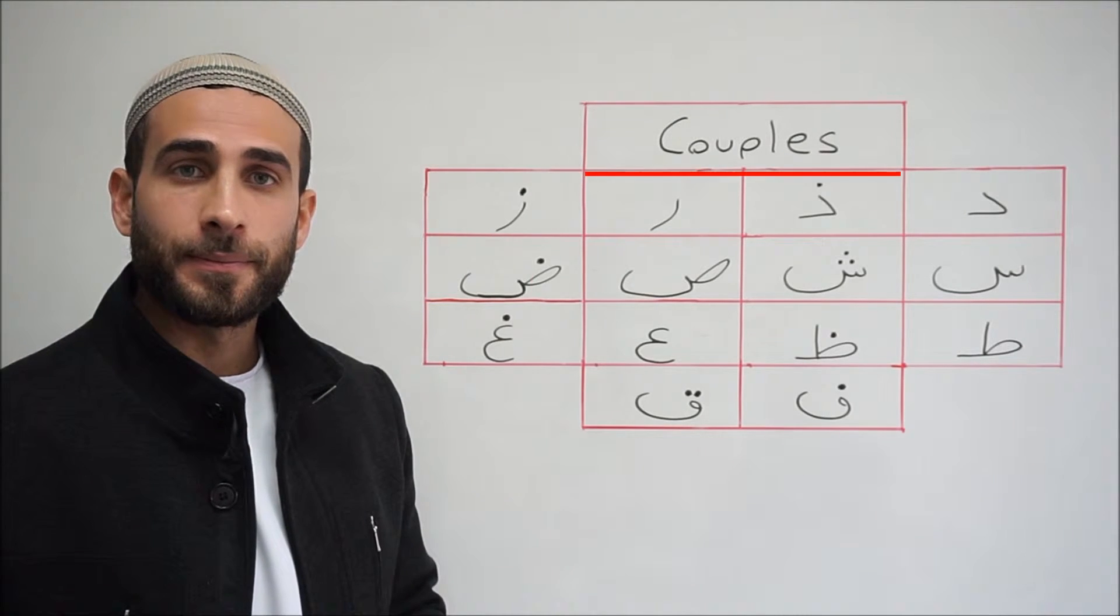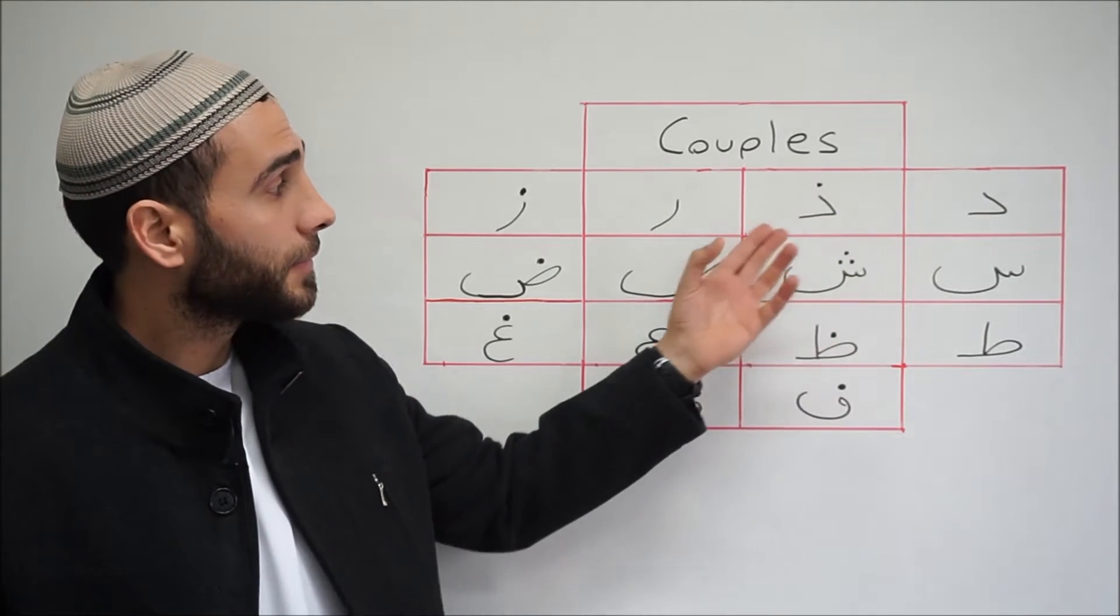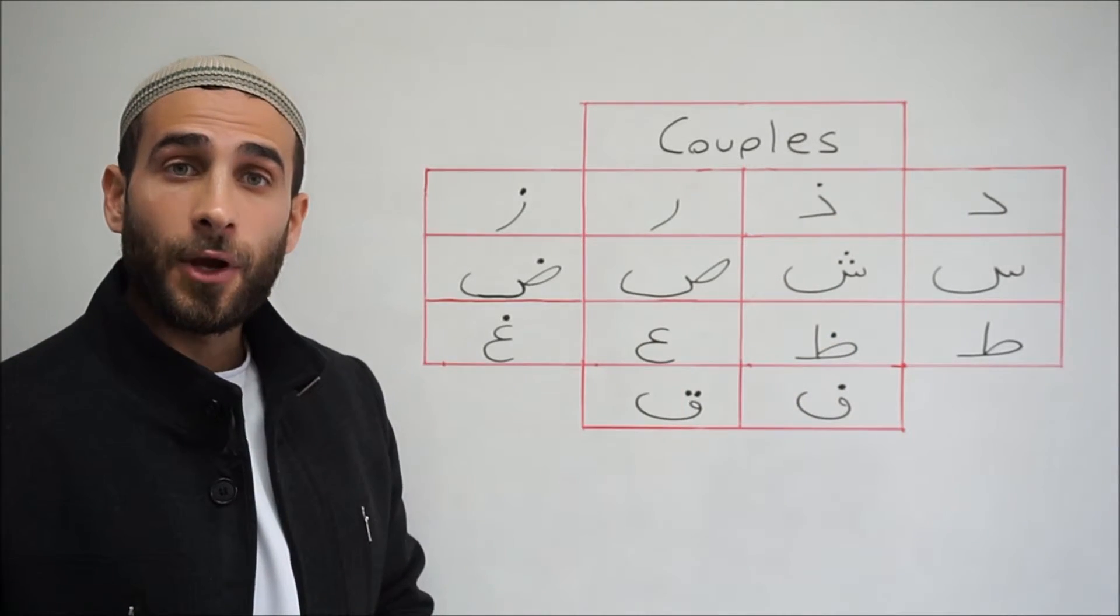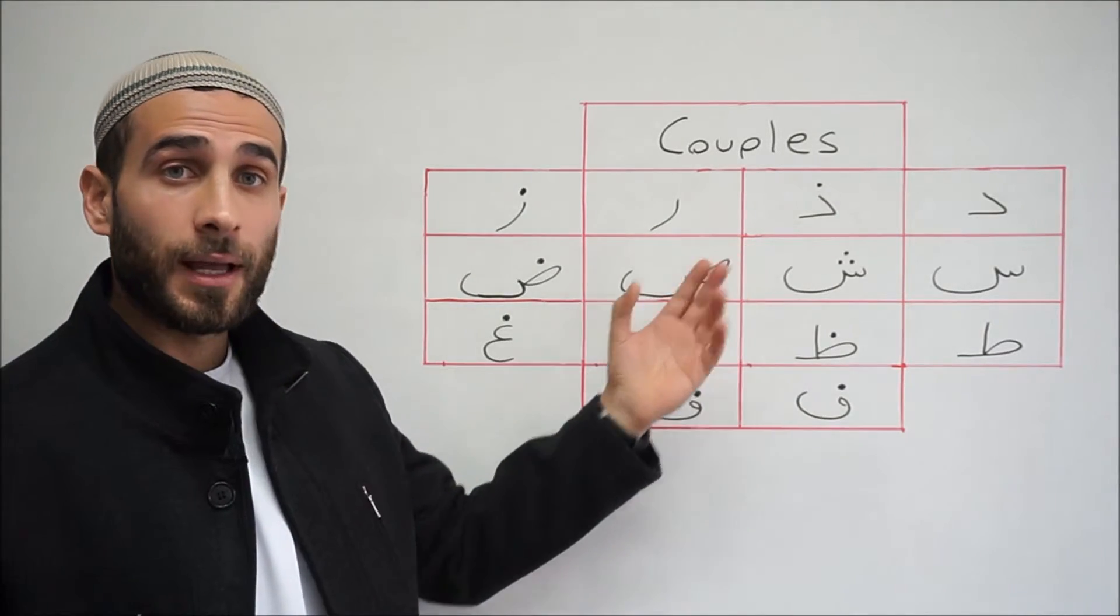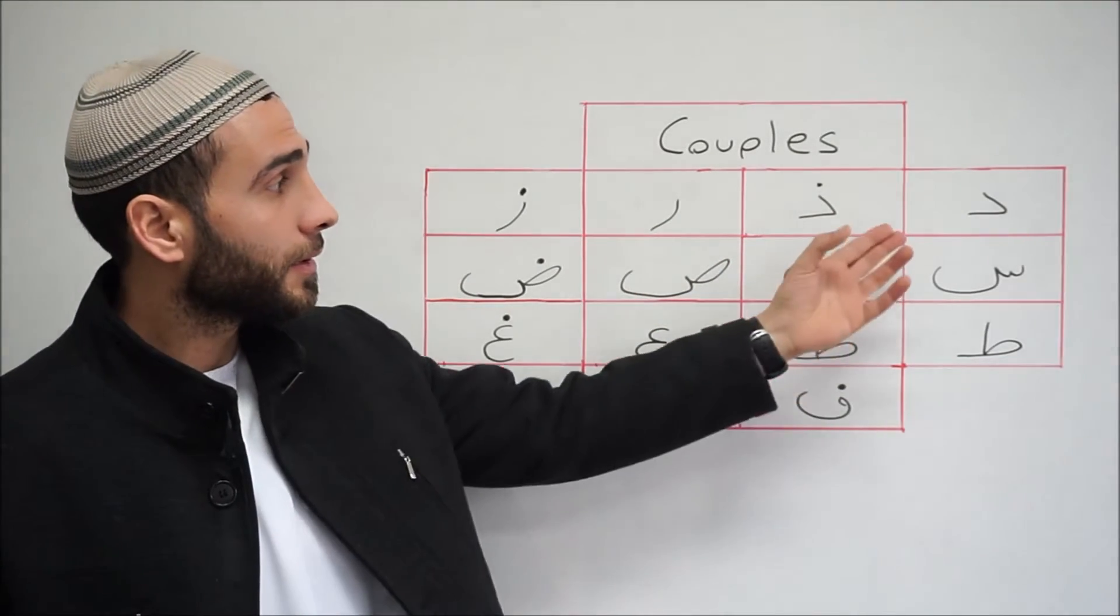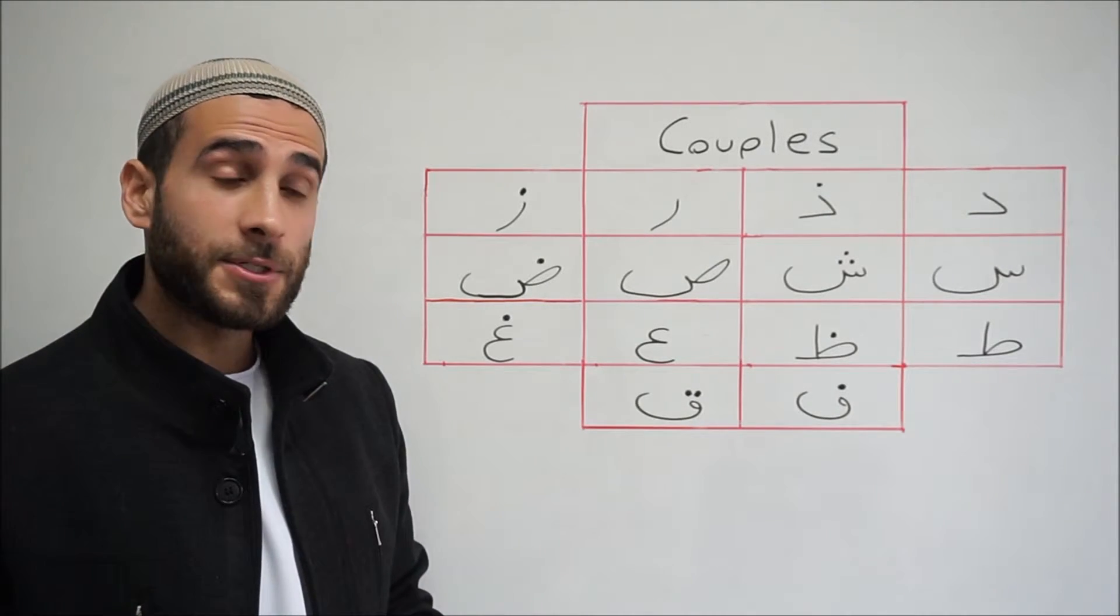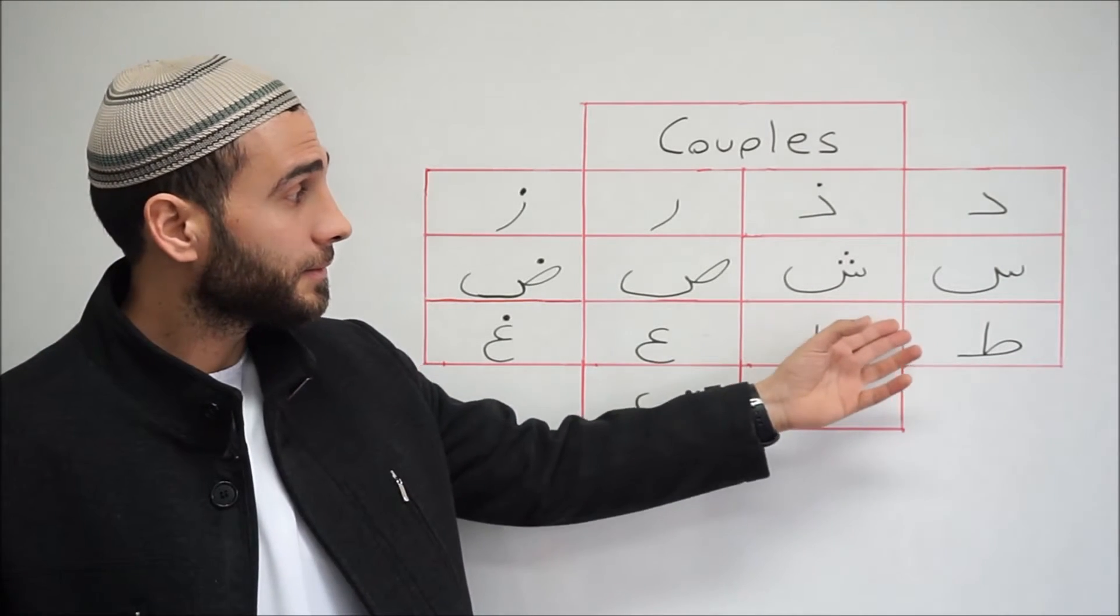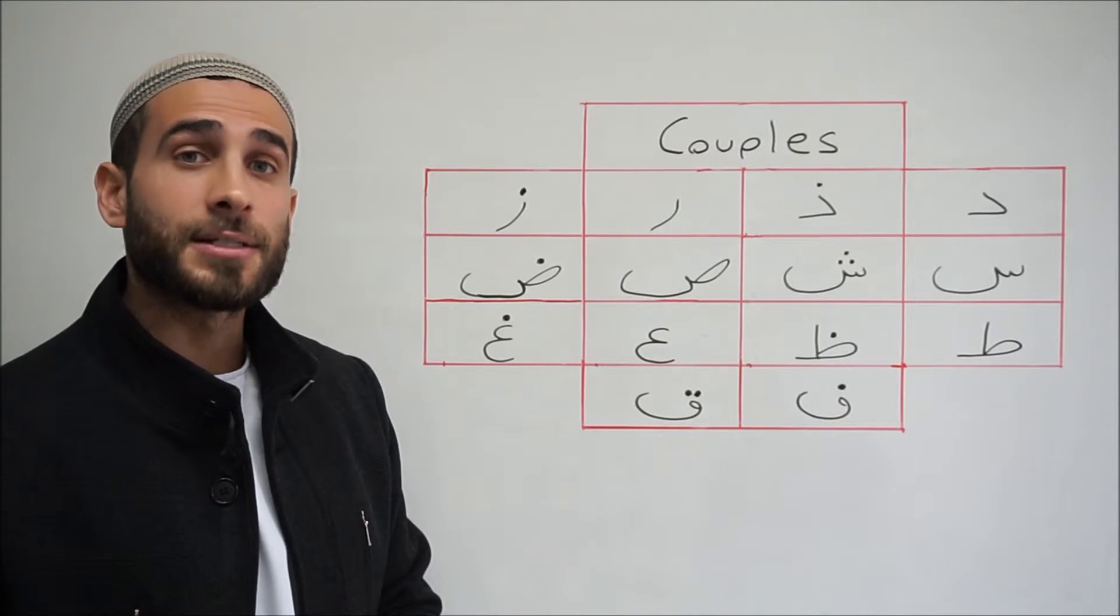We also have couples. These are letters that have the same shape. The only difference is that the second letter has one more dot than the first letter. The only exception is the SEEN and the SHEEN, where the second letter has three dots.